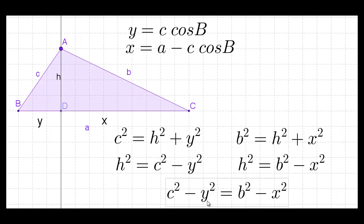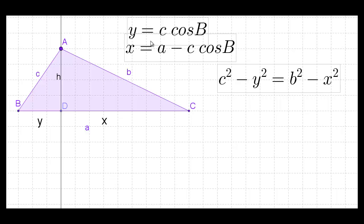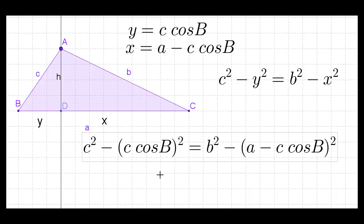We still want to get rid of y and x. We do it by substituting what we know: y equals c cosine B, and x equals a minus c cosine B. We take those and substitute them in wherever we see y and x. After the substitution: c squared minus (c cosine B) squared equals b squared minus (a minus c cosine B) squared. Now we've rid ourselves of anything except the original a, b, c and their angles.